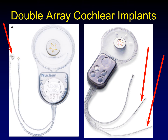Why is it important to identify labyrinthitis ossificans? Because there are different cochlear implant types that can overcome its difficulties. A double array cochlear implant has two electrode arrays instead of one — shorter, straighter, and more rigid. They won't go as deep into the cochlea, but you can still get enough nodes inserted by placing two arrays. It's a whole different instrument to be used when labyrinthitis ossificans would interfere with placement of a standard array.